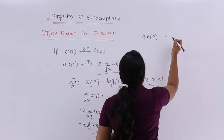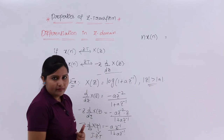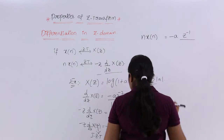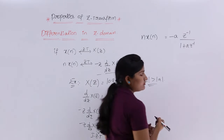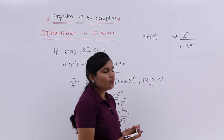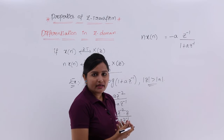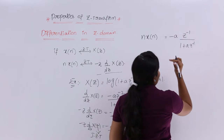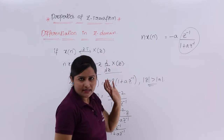Coming to the right side, I am writing this separately: minus A times AZ⁻¹/(1 + AZ⁻¹). I need to find the inverse Z transform of AZ⁻¹/(1 + AZ⁻¹). Rewriting it, this is 1/Z divided by (1 + A/Z), which after cross-multiplying becomes 1/(Z + A). So I need to find the inverse Z transform of 1/(Z + A).